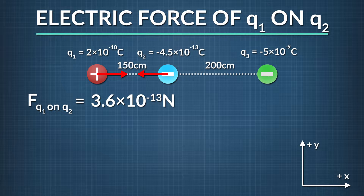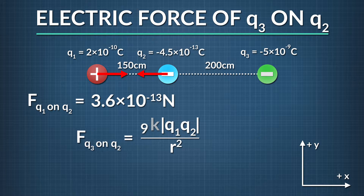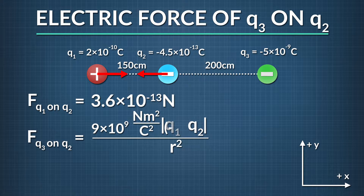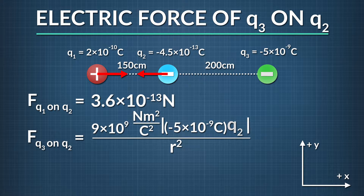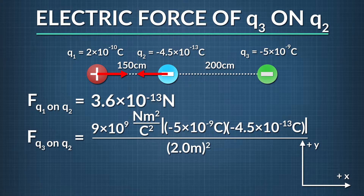The next step is to figure out the electric force magnitude of q3 on q2. Plugging in for k, 9 times 10 to the ninth newton meters squared divided by coulombs squared, negative 5 times 10 to the negative ninth coulombs for q3, negative 4.5 times 10 to the negative thirteenth coulombs for q2, and 2.0 meters for r.